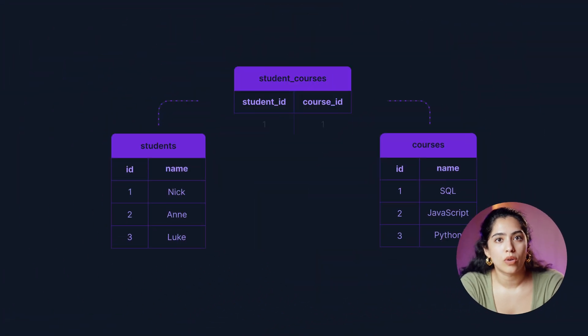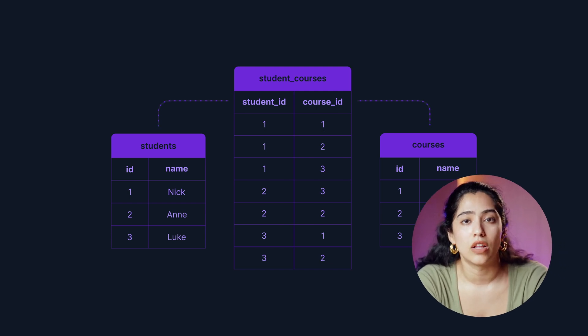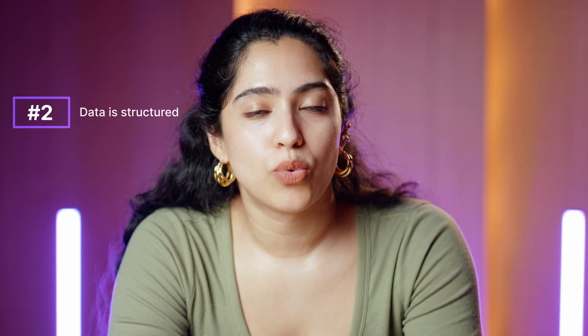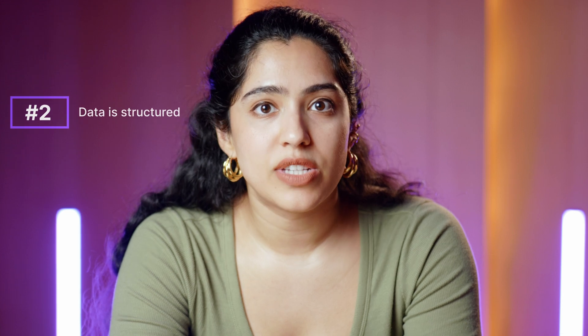Let's start with the strengths of SQL databases. First, SQL databases are relational databases, which means that they allow easy querying on relationships between data among multiple tables. Table relationships are really important for effectively organizing and structuring a lot of different data. Second, the data is well-structured, and the room for potential error is therefore reduced. This is because SQL schemas require the data model and format of the data to be known before storing anything.